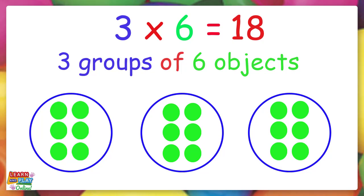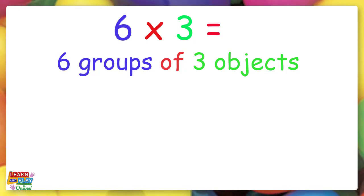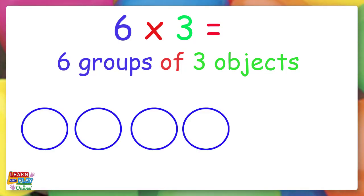Let's use the commutative property and swap the numbers 3 and 6 around and work out 6 times 3. We need to make 6 groups of 3 objects. Great! Let's start making our 6 groups. 1, 2, 3, 4, 5, 6.